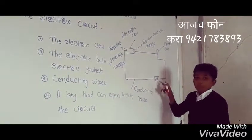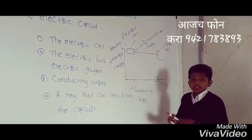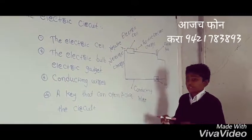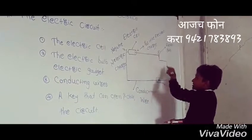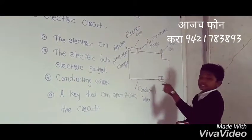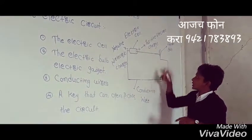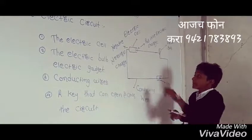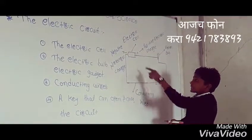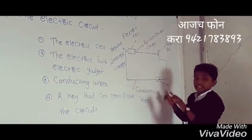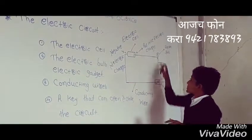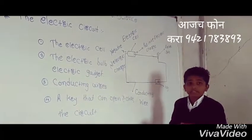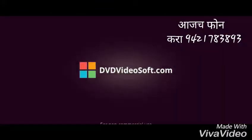Last point: the key that can open and close the circuit. When the negative electric charges and positive electric charges are attached to each other, the bulb lights up. And when the charges cannot connect, the bulb cannot light up.